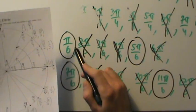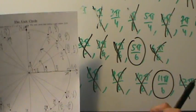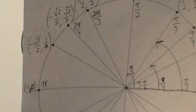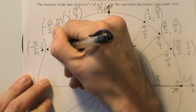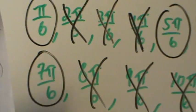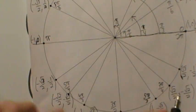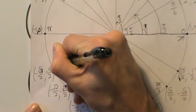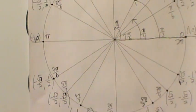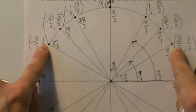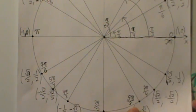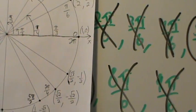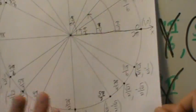Pi over 6 is in the first quadrant — already labeled. 5 pi over 6 goes in the second quadrant (the only unlabeled angle there). 7 pi over 6 goes in the third quadrant. 11 pi over 6 goes in the fourth quadrant. You can use the reflection technique: pi over 6 reflects to 5 pi over 6, reflect again to 7 pi over 6, then to 11 pi over 6. And that is the entire unit circle!